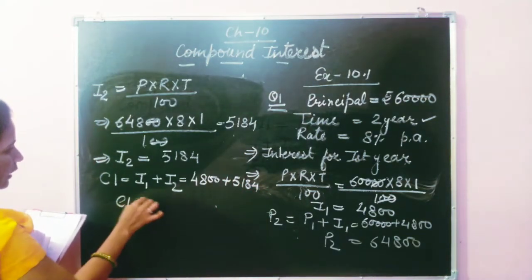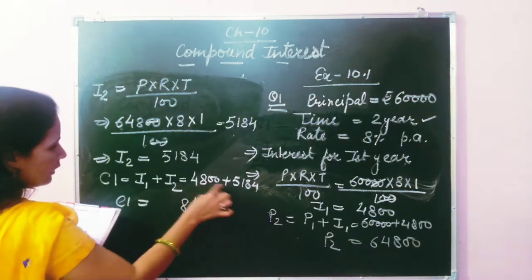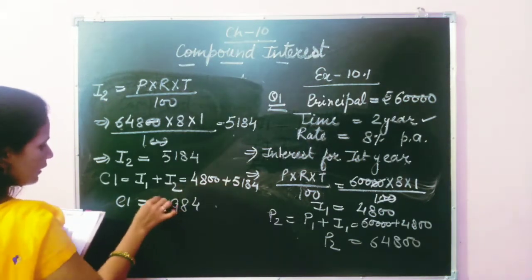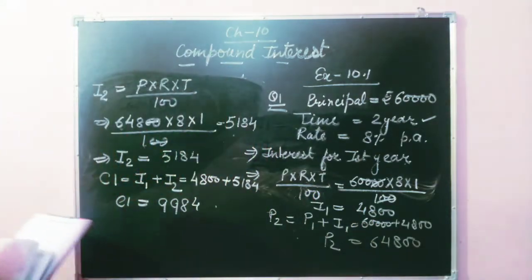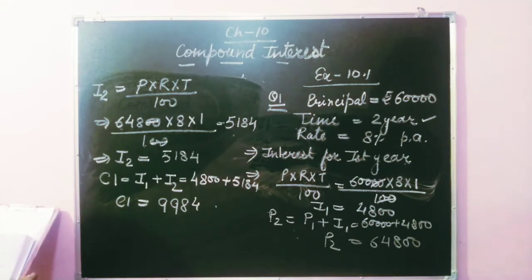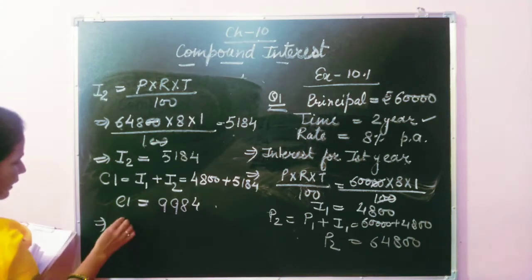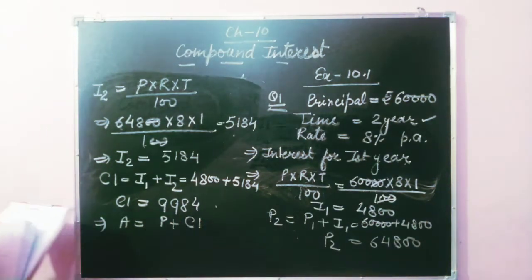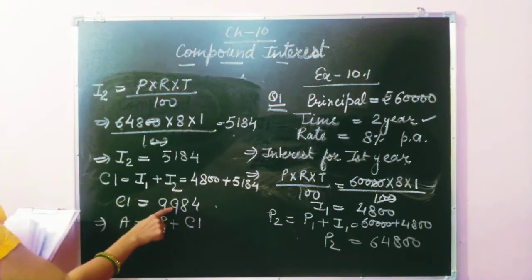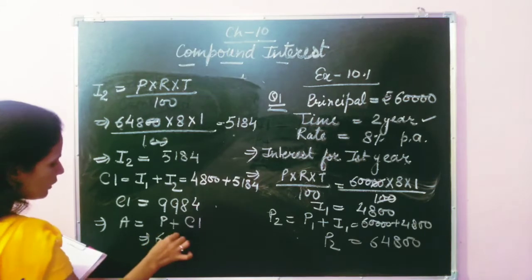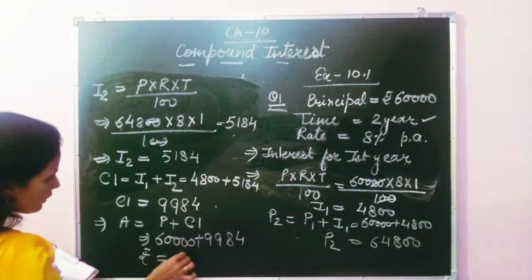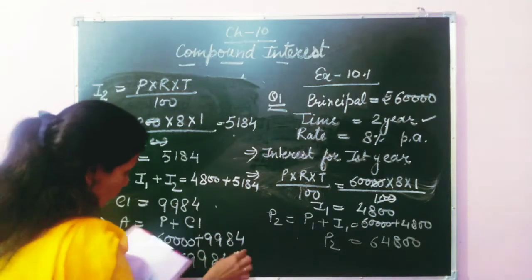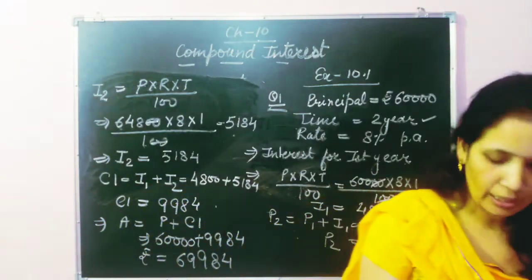Adding ₹4,800 and ₹5,184, the total compound interest is ₹9,984. This is the interest amount paid by the person after 2 years compounded annually. The final amount Mrs. Sharma will receive is: Principal + CI = ₹60,000 + ₹9,984 = ₹69,984. So Mrs. Sharma will receive ₹69,984 after 2 years.